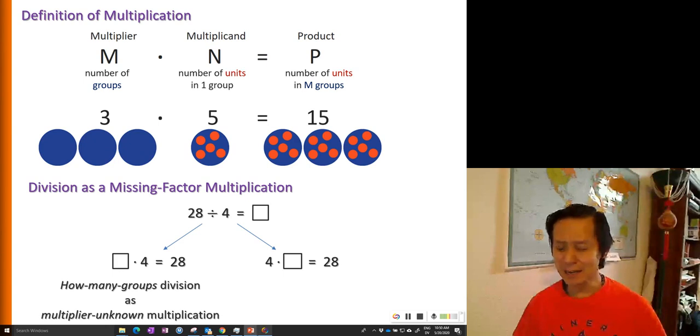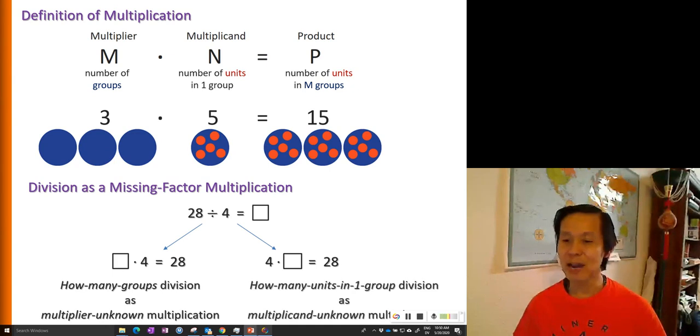The other type is that the multiplicand is unknown. So in this case, we want to find the number of units in each group, given that there are four groups. So this is called the how many units in one group type of division or multiplicand unknown multiplication.